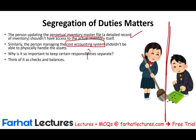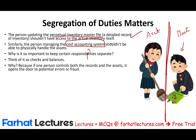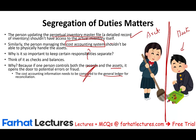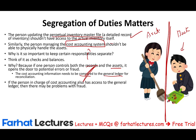Think of checks and balances. The person in charge of the books tracks the records, while the production people have physical access to the asset. If one person controls both the records and the asset, it opens the door to errors and fraud — they could change the record and steal or misuse the asset. The cost accounting system and the general ledger need to be reconciled, so they must be separated. If the person managing cost accounting also has access to the general ledger, those two systems could be manipulated without detection.